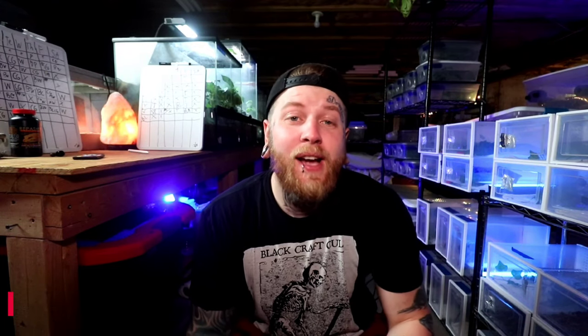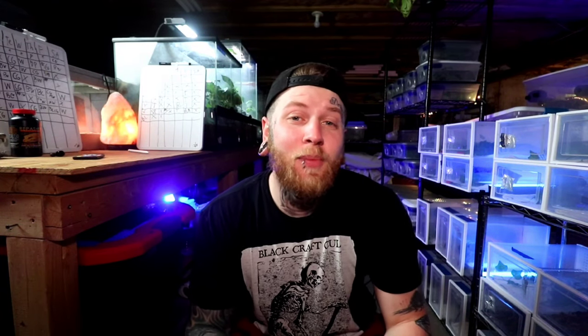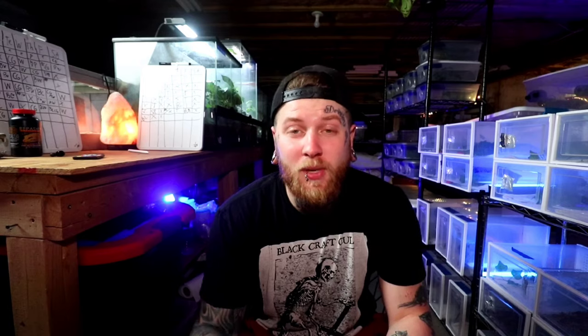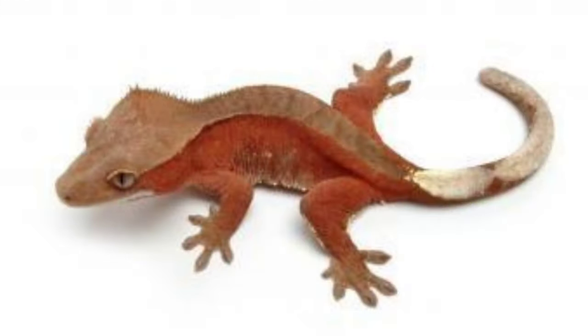Moving on, let's get into the next topic, which is going to be number two: the bicolor crested gecko. Unlike your buckskin or patternless crested geckos, the bicolor is going to be a little bit different. It is going to be a patternless gecko; however, it is going to have a different shade on the dorsal. Usually the top is either lighter or darker than what you see on the sides — hence bicolor. It's a gecko with two different shades of color.